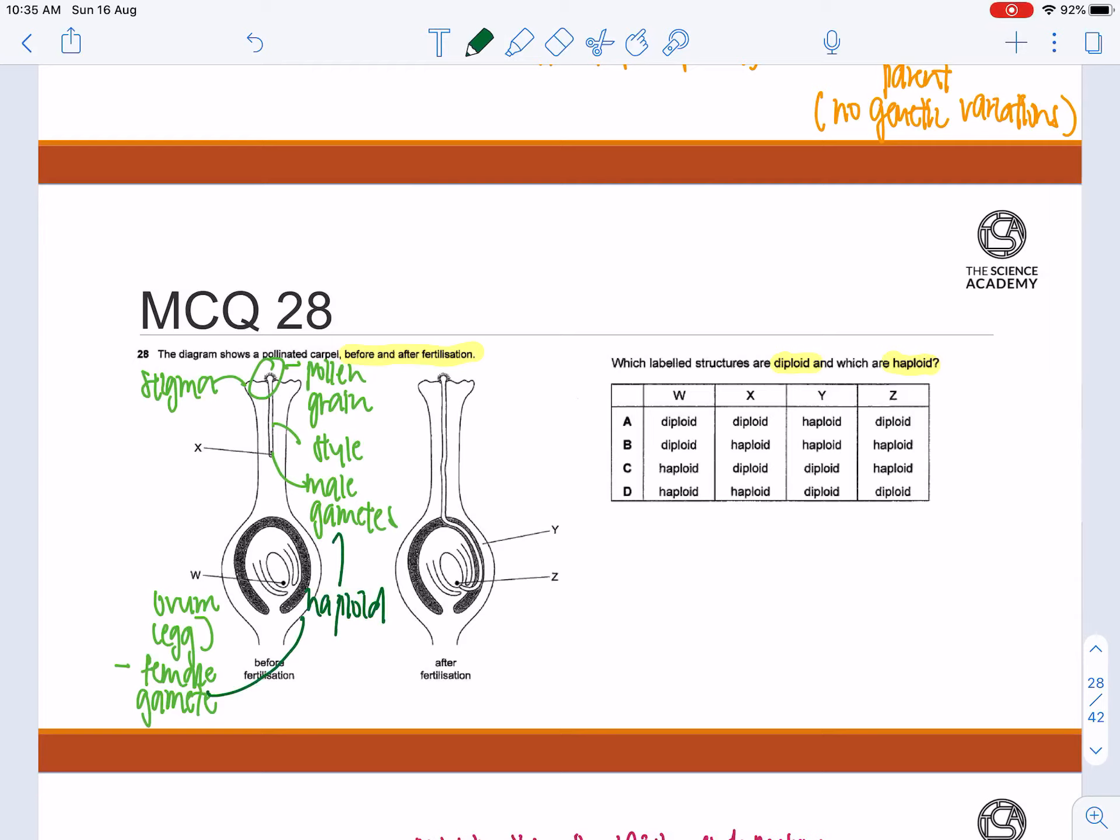So based on elimination, W and X will be haploid.